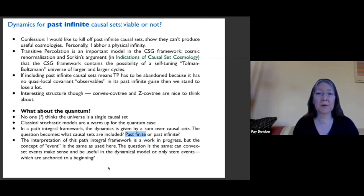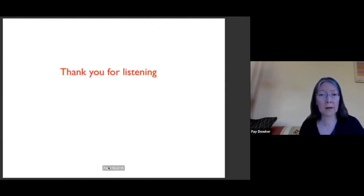The interpretation of this path integral framework is a work in progress, but the same concept of event that I used in this talk as being physical statements that you can make about the causal set is the same. That carries over into the quantum case within a path integral framework, because the path integral is a species of measure theory. It's a generalization of the concept of the classical stochastic process. So the question then is the same question within the quantum context. Can convex set events make sense or are they useless? And can only stem events which are anchored to a beginning make sense and be useful in a quantum dynamical model? And I'll end there, and thanks for listening.